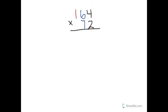Your next step would be to multiply the two digits in the ones column. In this particular example you would be multiplying 4 times 2, which is 8.